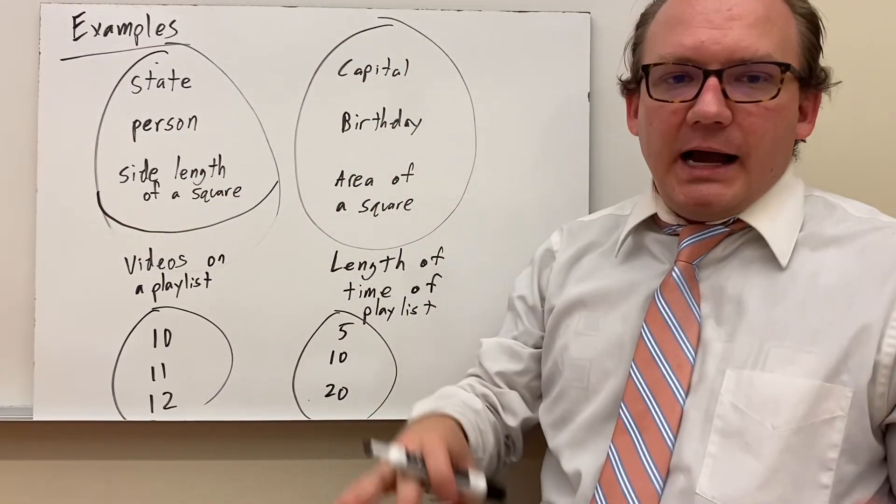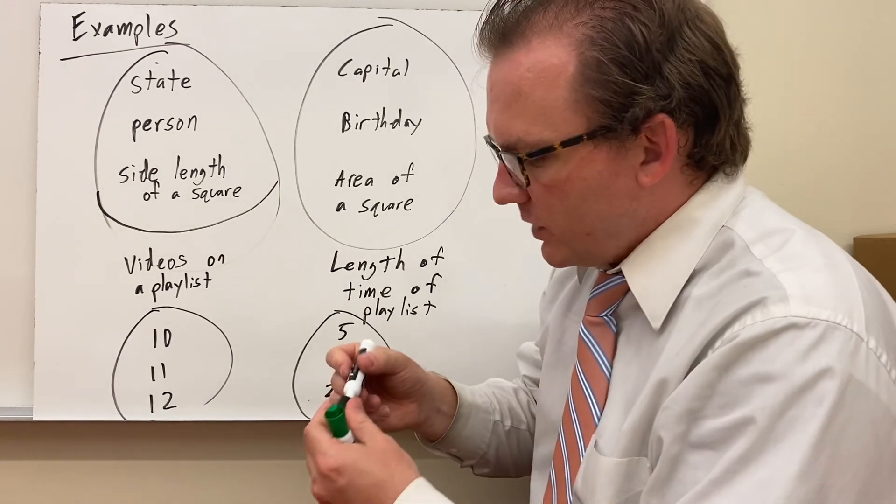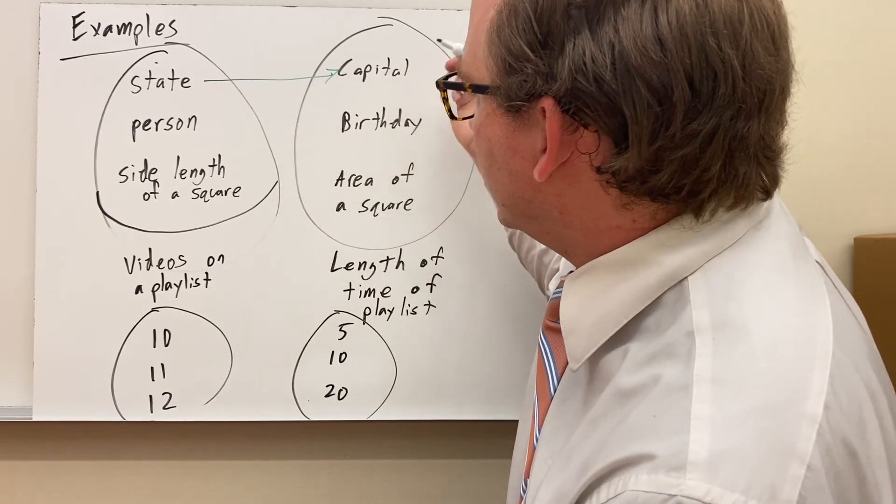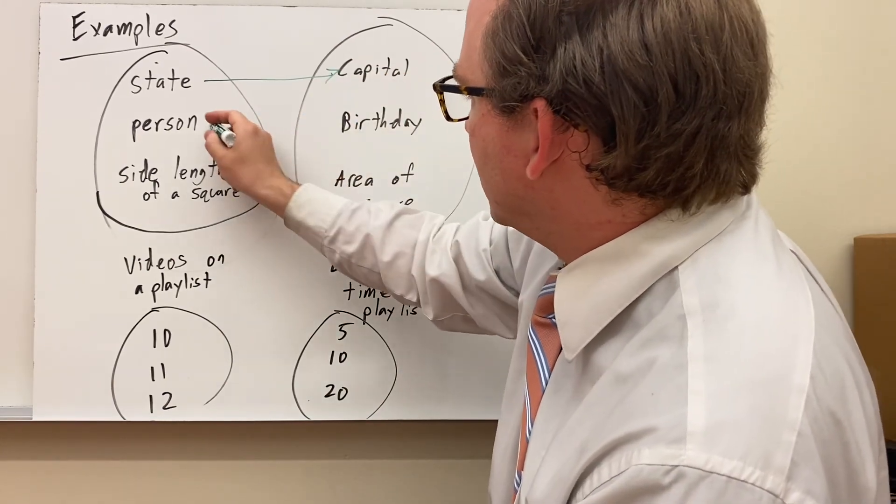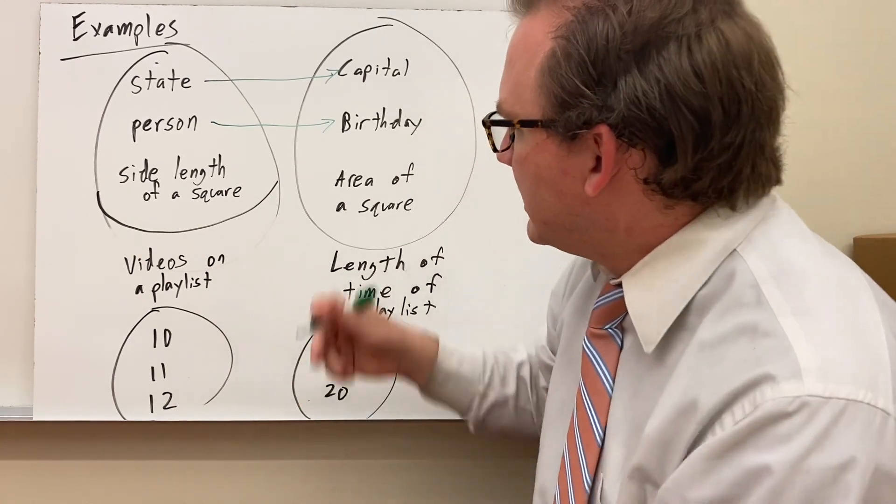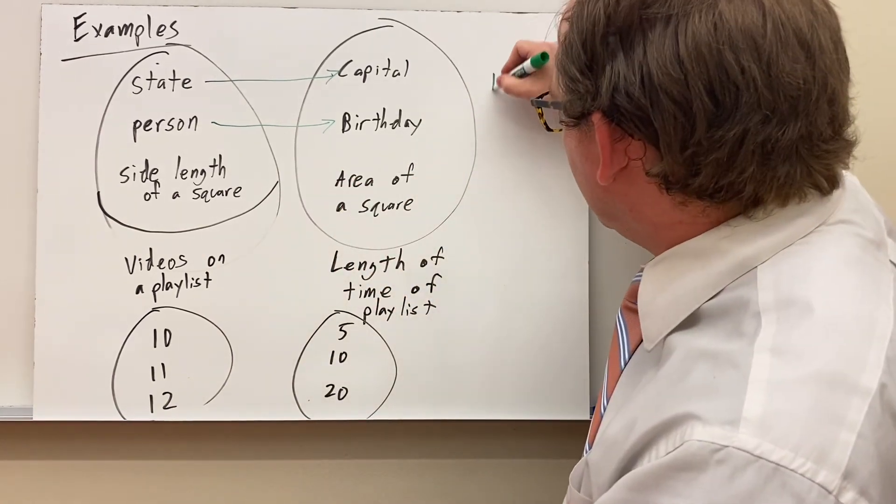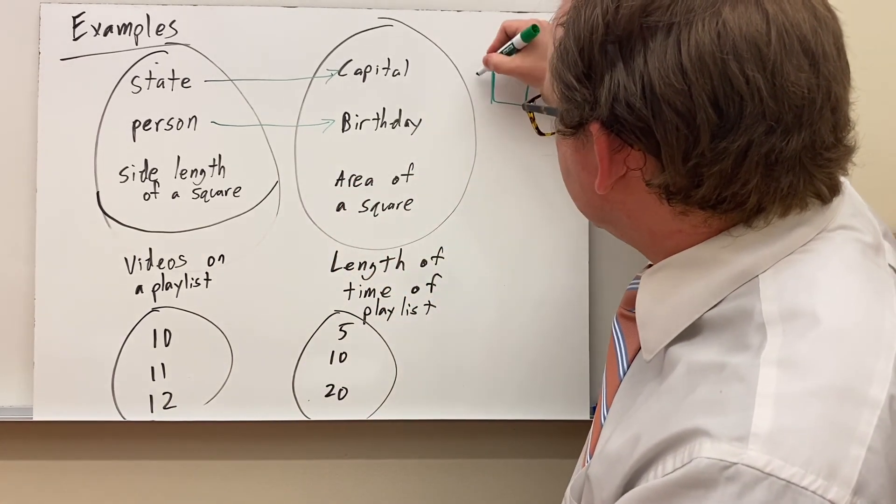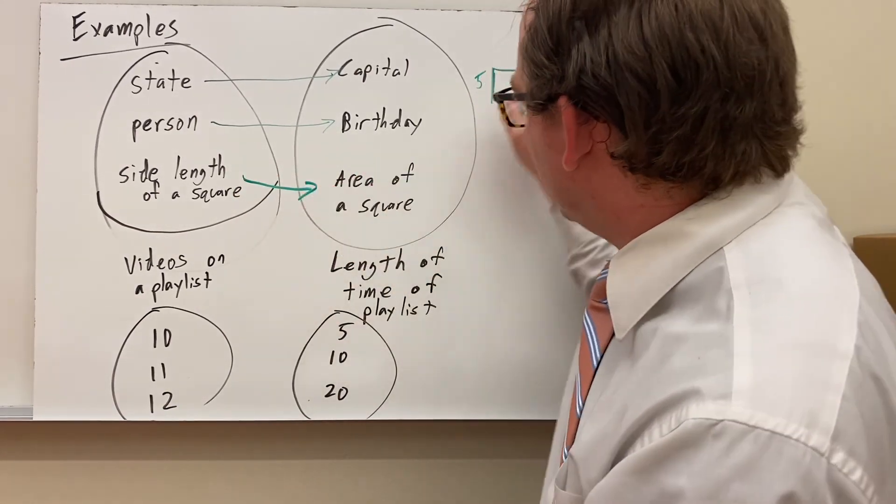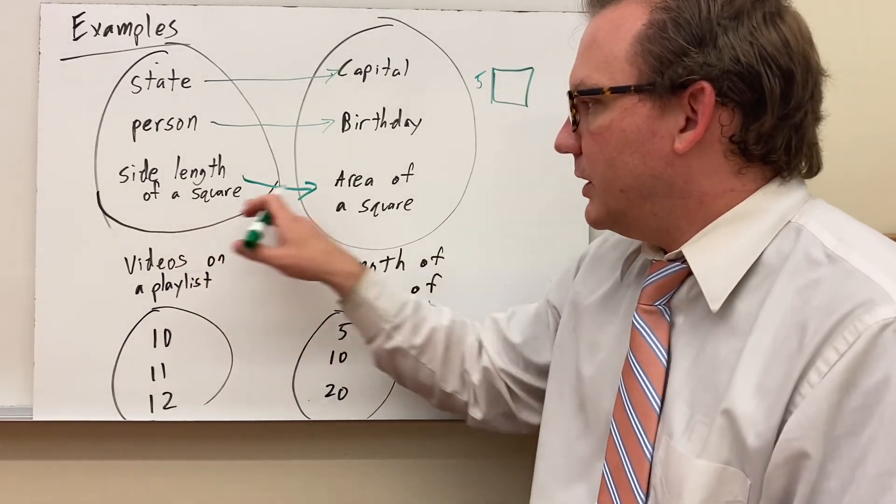Here are some actual examples. We have states. Each state only has one capital, so that would be a function. If I'm a person, each person only has one birthday, so again that is a function. Side length of a square. If I draw a square and I say the side length is five, well the area is always going to be the same no matter what.